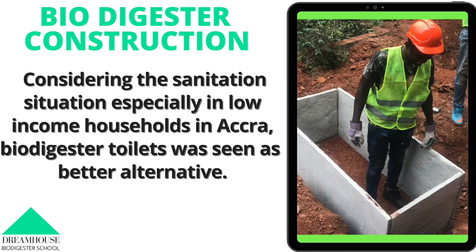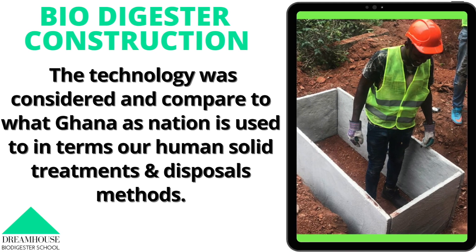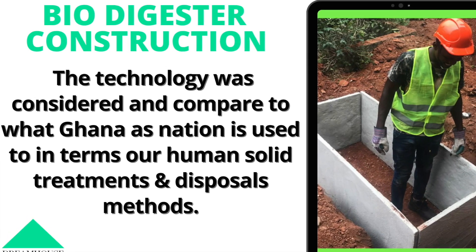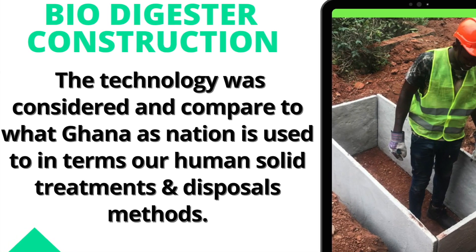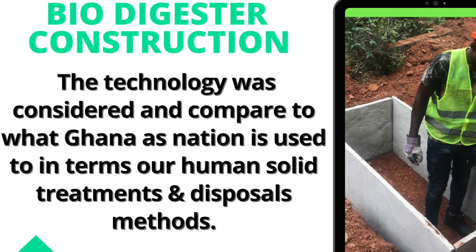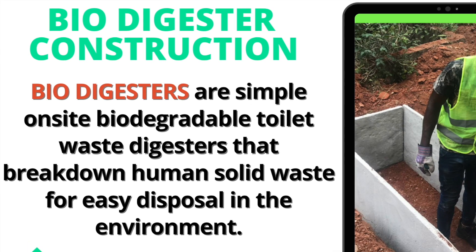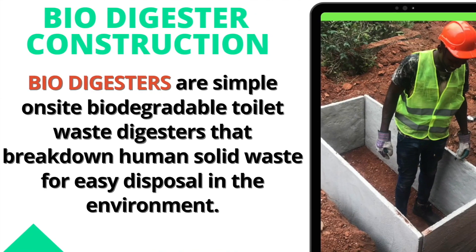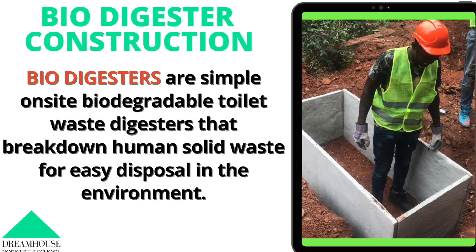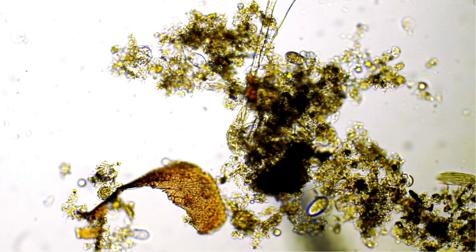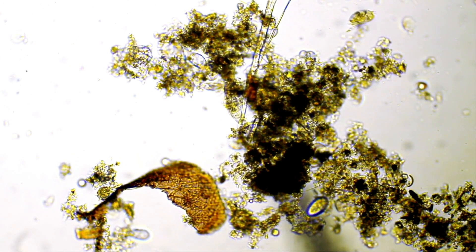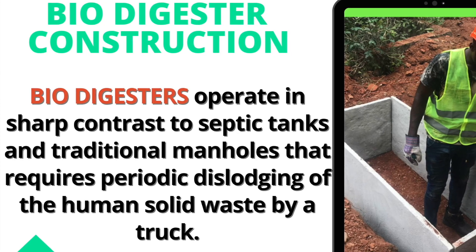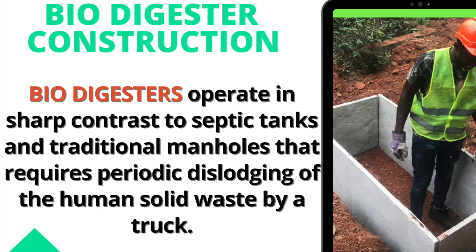There are various forms of biodigesters, but what we are going to learn in this course is the bio-fill type that has been designed, implemented, and has governmental approval in Ghana. I will teach you the two main forms — the one that started biodigester construction in Ghana and the new improved one with enhancements. A biodigester is a simple on-site biodegradable toilet wastewater technology that biodegrades human waste and treats fecal matter through a process known as anaerobic digestion, where naturally occurring microorganisms break down human waste in the absence of oxygen, so the effluent produced is clear, odorless, and fly-free, and can be safely disposed of in the environment.